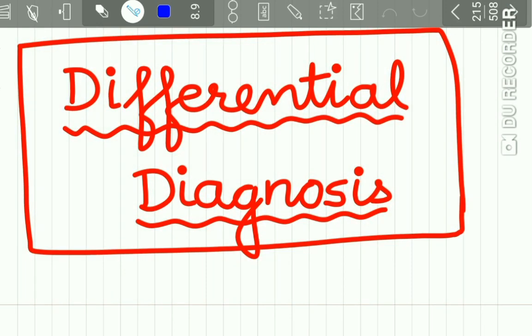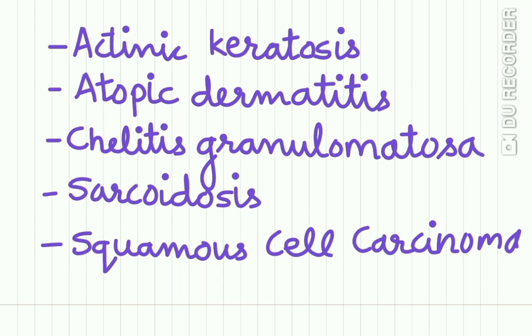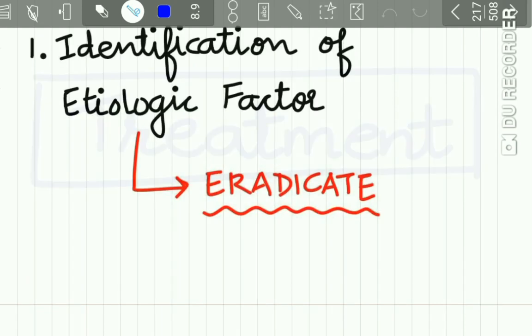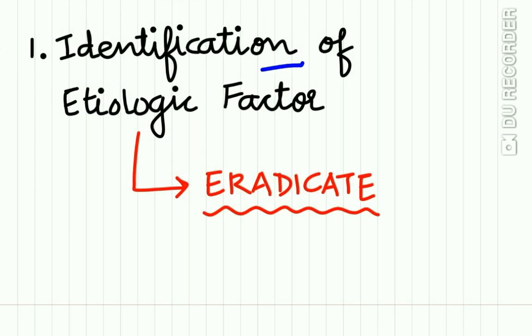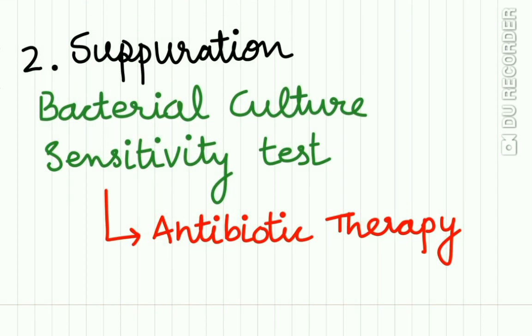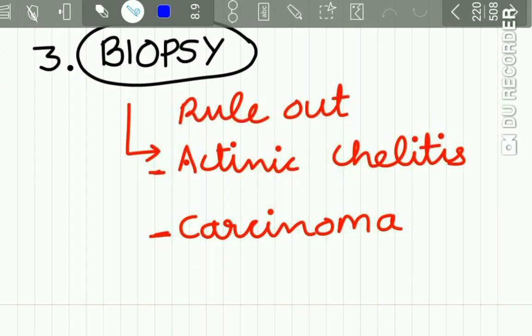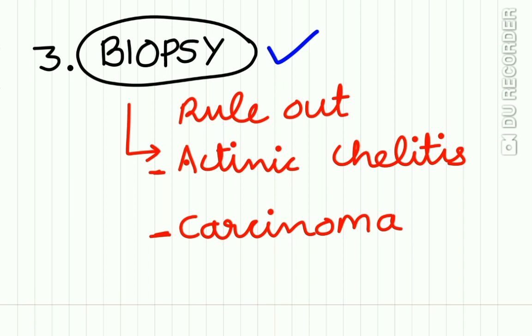The differential diagnosis of Cheilitis Glandularis includes actinic keratosis, atopic dermatitis, Cheilitis Granulomatosa, sarcoidosis, and squamous cell carcinoma. Treatment involves: first, identification and eradication of the etiologic factor; second, in suppurative lesions, bacterial culture and sensitivity testing for appropriate antibiotic therapy; and third, biopsy is strongly recommended to rule out actinic cheilitis and squamous cell carcinoma.